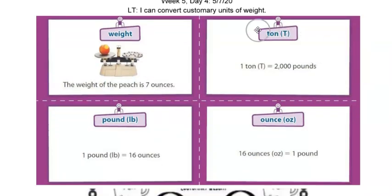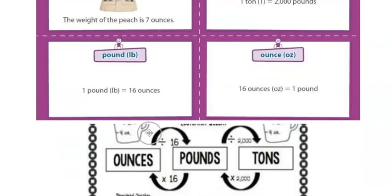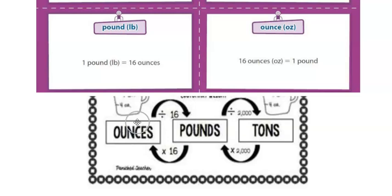So today we're going to be talking about tons. So think of like an elephant, pounds, think of like a person, and then ounces is going to be like those really small items. So again, you have your conversion chart here from ounces to tons, following those arrows from one unit to another in order to solve.